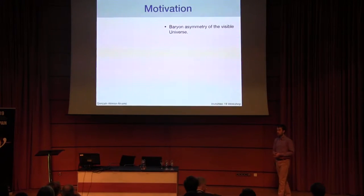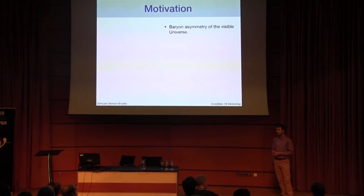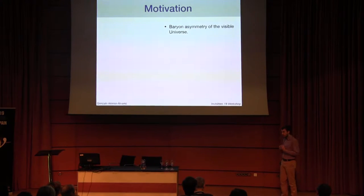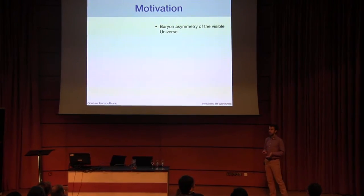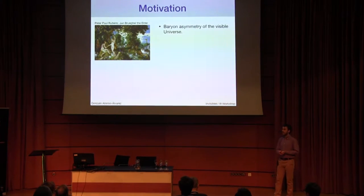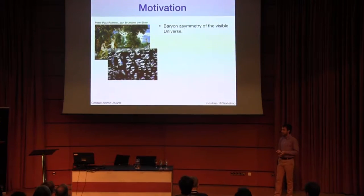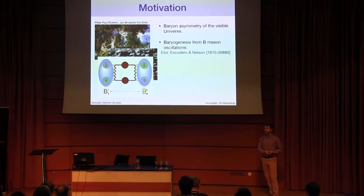The question I'm trying to address is the existence of the baryon asymmetry in the visible universe — or said otherwise, to try to explain the origin of the matter of which we are composed. This is an important question that people have been theorizing about for a very long time, but fortunately there are some ideas which are more testable than others.